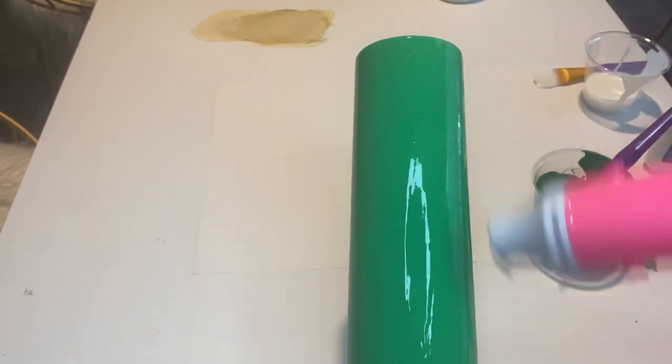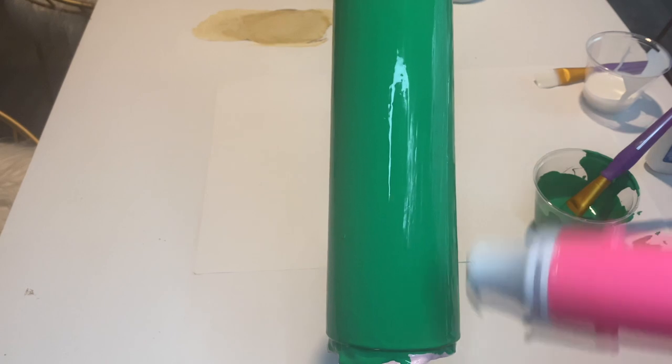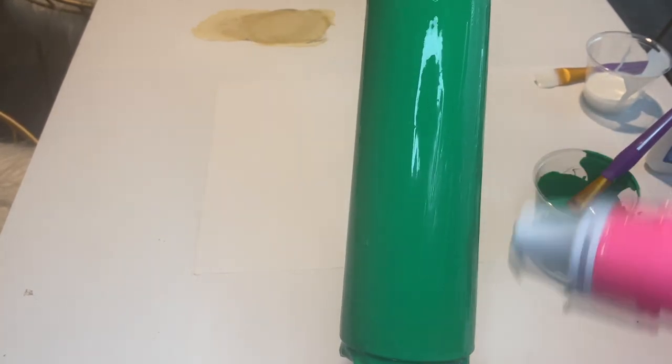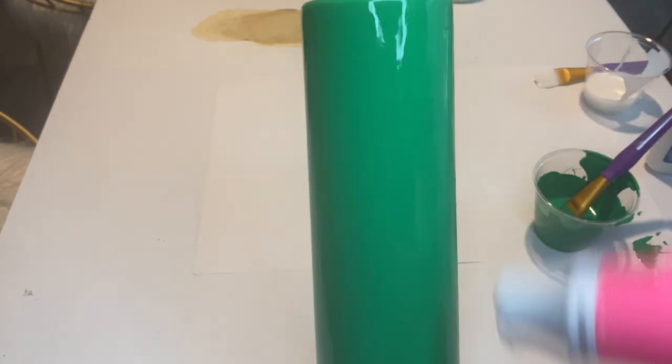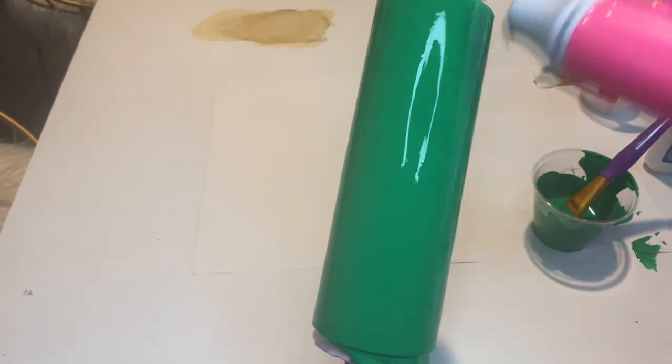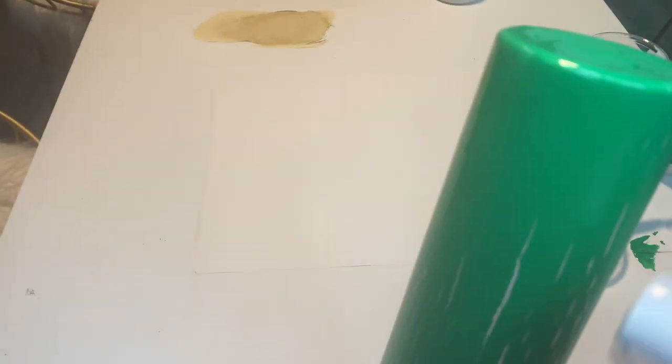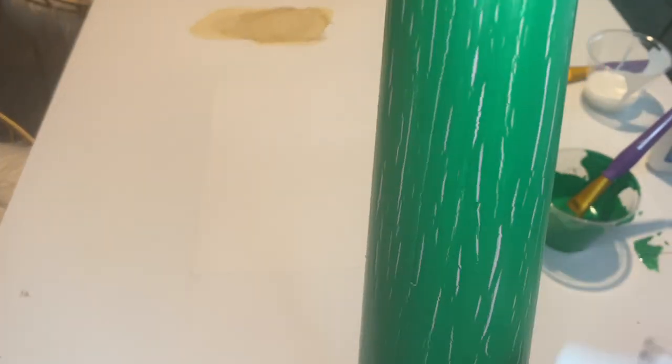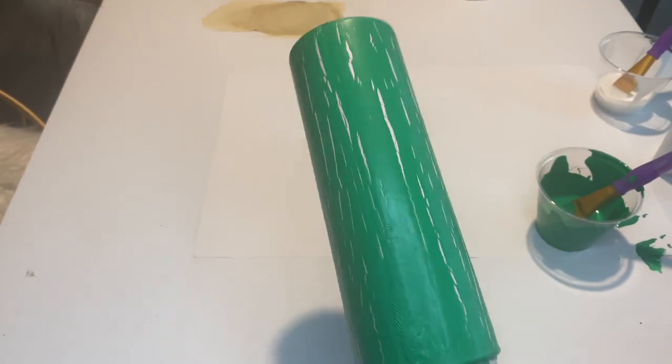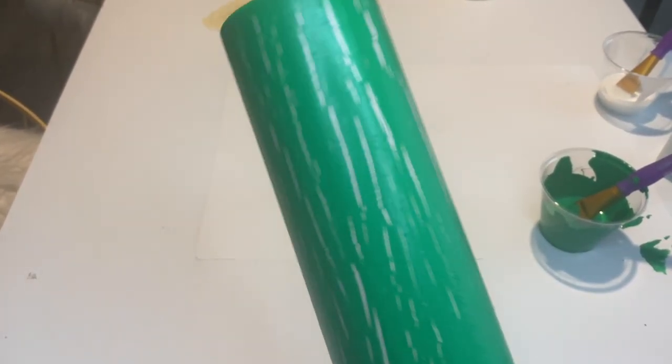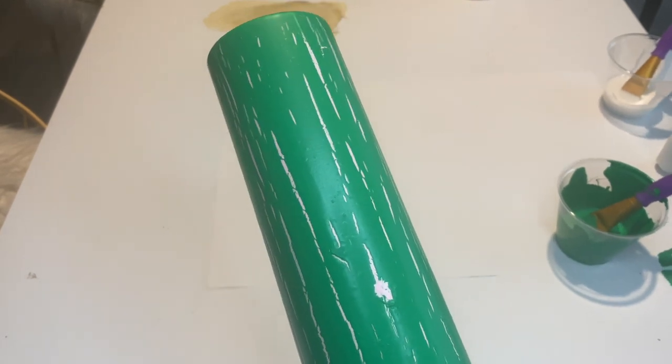Put heat on the tumbler until the paint starts to crackle. Depending on how wet the paint is and how hot your heat gun is, it will vary how long this will be. But you will start to see when the tumbler will start to crackle. You want to go on an up and down motion because if you focus on one area for too long, then you will start to burn the paint. Just continue to sweep up and down the tumbler.